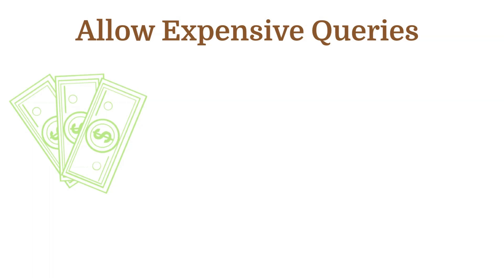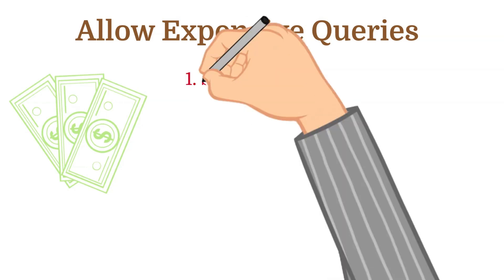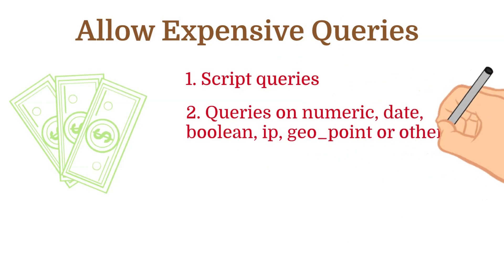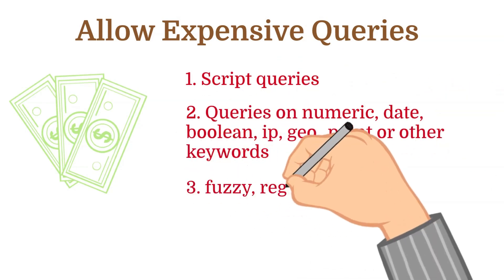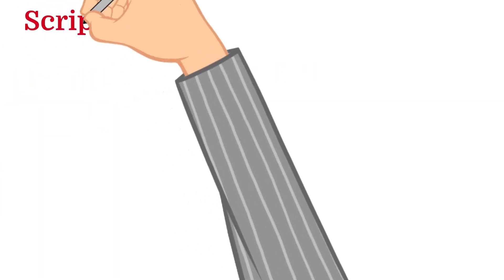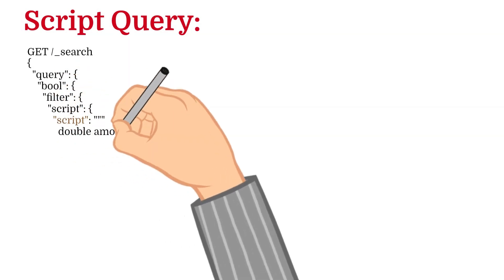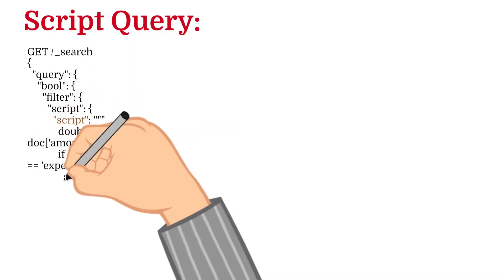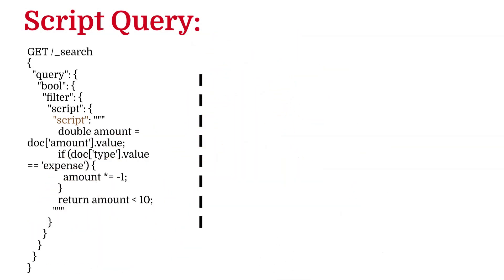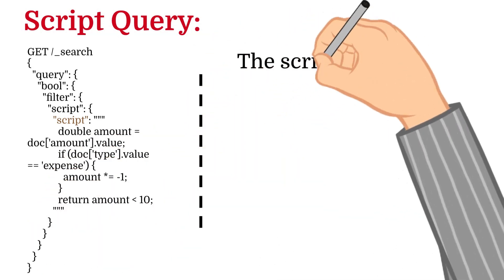The first type of expensive query is known as the script query. The script query filters documents based on a provided script. The script query is typically used in a filter context. Let's see an example of the script query. I will keep it limited to this example and let you explore more about allow expensive queries or script queries. If you need more information, leave a comment and I'll create a dedicated video for it.